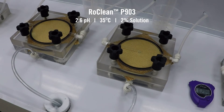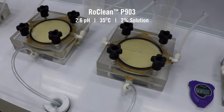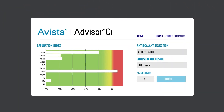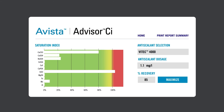Avista cleaning studies are used to trial cleaner combinations to confirm the optimal solution to restore systems to baseline performance and increase time between cleans. Using Advisor CI, our chemical dosing software, we can prevent scales from the bottom up, stopping foulant before it starts, for stable system performance.